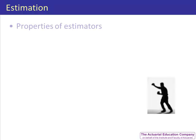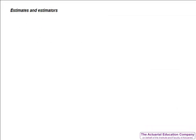In this unit we'll look at two properties of estimators: the bias and the mean square error. First of all we need to look at the difference between an estimate and an estimator. An estimate is a single value — for example, we might estimate the value of mu to be 5, or more generally, we'd write little x bar as it's a particular value. Whereas the estimator is the distribution of the estimates, so we would use a capital X to stand for its distribution. Here we're going to look at the properties of the estimators — in particular the mean and variance of the distribution of these estimates compared to the true value.